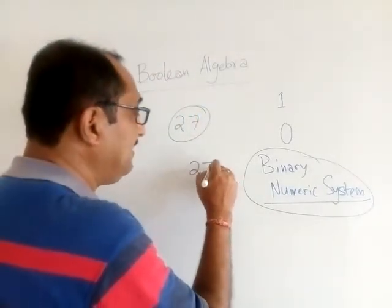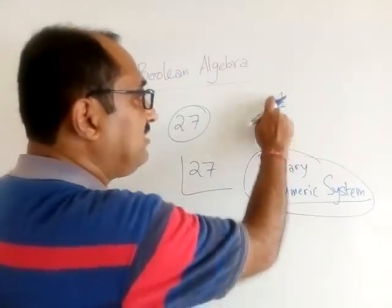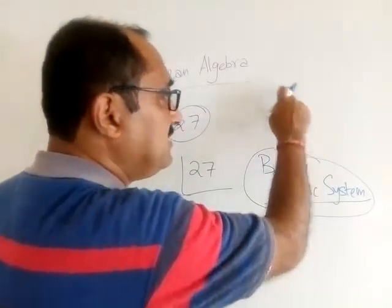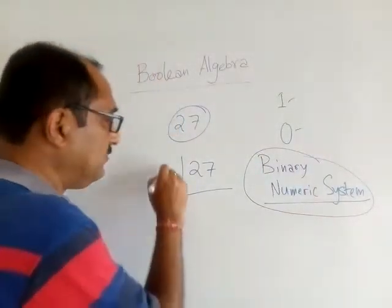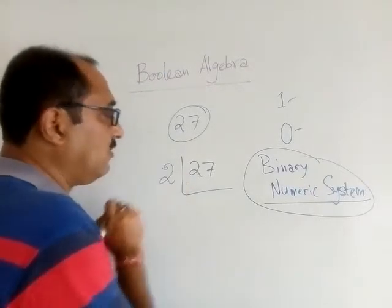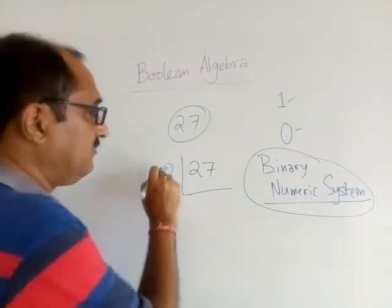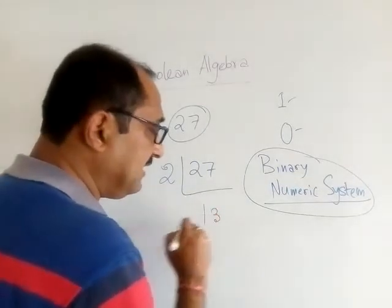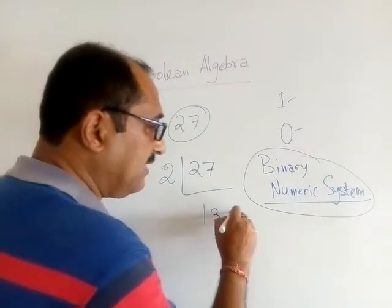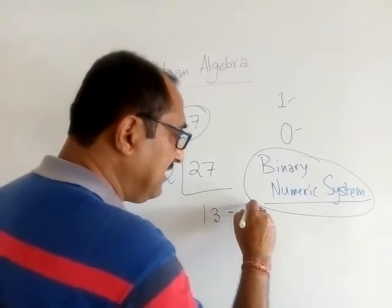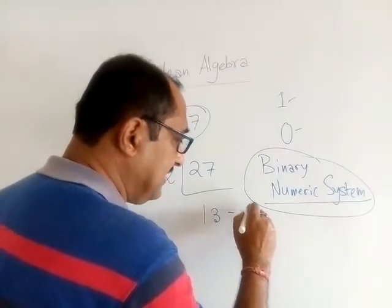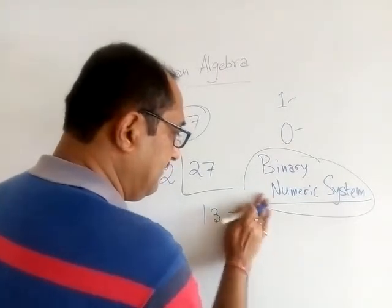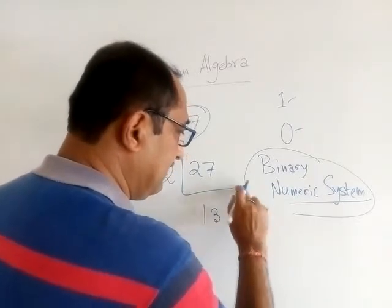So if you divide 27 by 2, what will you get? 13, 2 goes into 26, and 1 will be the remainder. So this remainder I'm writing on the right hand side like this. I'm writing over here. Again you divide 13, 2 goes into 12, 1 is the remainder.